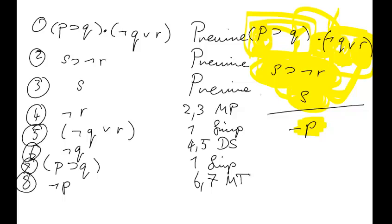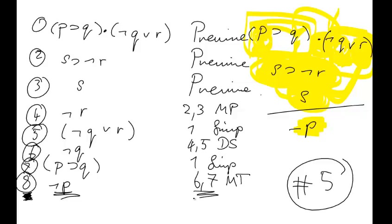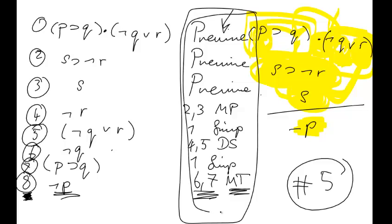At this point you might wonder how I did certain steps — we'll call this example number five if you want to email me. But you shouldn't have to, because we have this nice accounting system. At each step it's justified: for instance, ¬p came from lines 6 and 7 by modus tollens; line 6 came from lines 4 and 5 by disjunctive syllogism; line 3 is a premise. Every step is accounted for — no gaps, everything's legitimate.